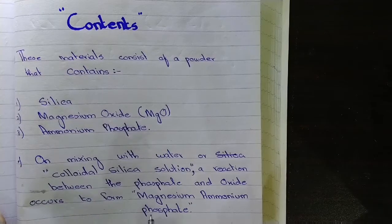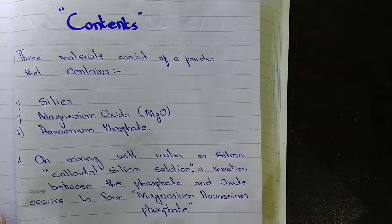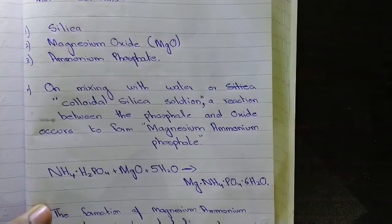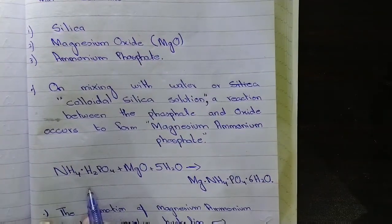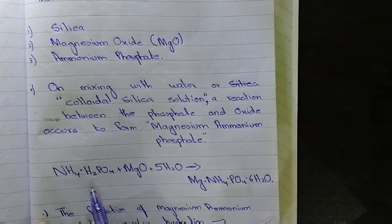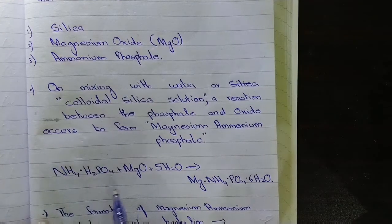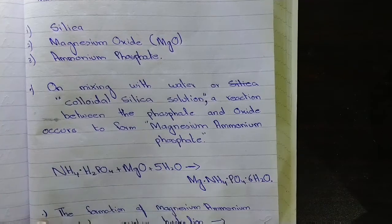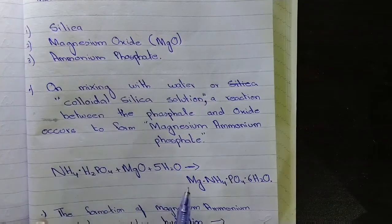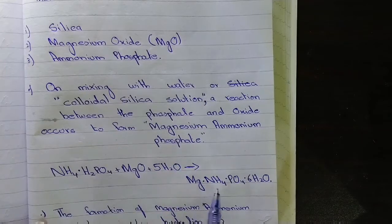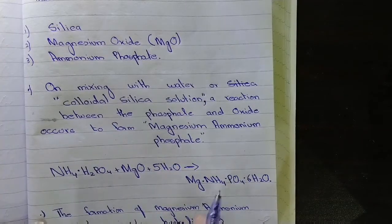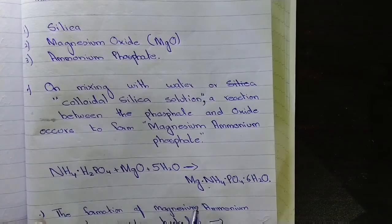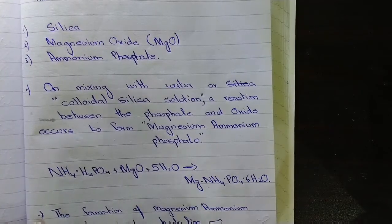Look at this equation: ammonium phosphate (NH4H2PO4) reacts with magnesium oxide (MgO) and undergoes hydrolysis, then forms magnesium ammonium phosphate (MgNH4PO4·6H2O). This compound is the binder in phosphate bonded materials.